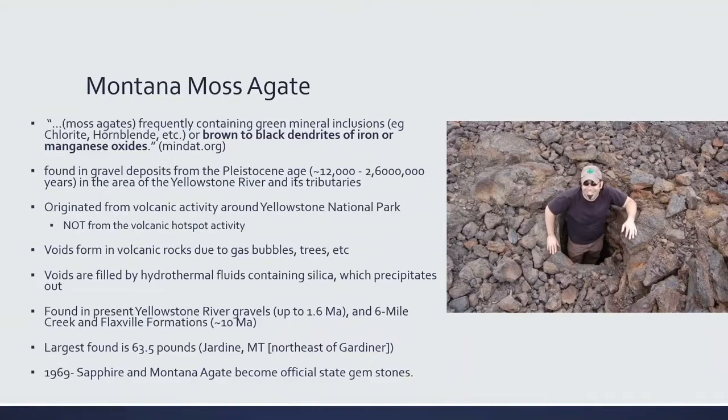The voids in the volcanic rocks can be due to gas bubbles, trees, and other features. For example, you can get tree limb casts — when a tree limb is covered in lava and pulled away, a void is left in the shape of the limb, and as that void fills with agate you get a limb cast that looks like a tree limb. You can see a photo of a friend standing in a tree mold at Craters of the Moon National Monument in Idaho, along the Snake River Plain where the Yellowstone hotspot used to be.